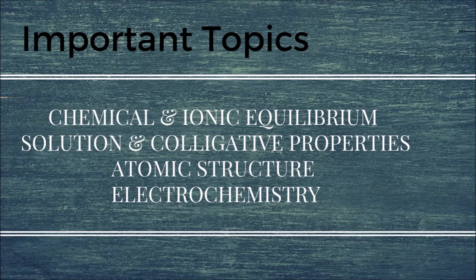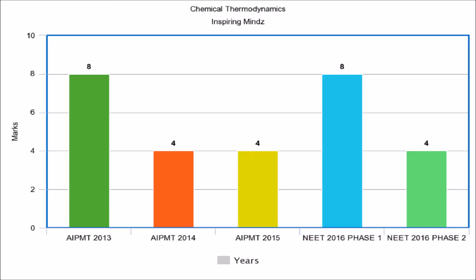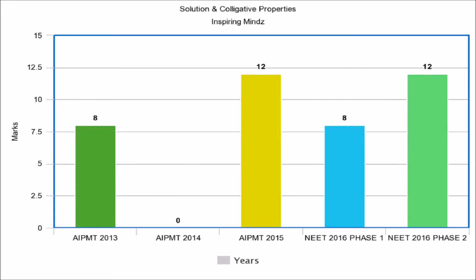Let's first discuss chemical bonding and ionic equilibrium. In AIPMD 2013, the weightage for this chapter was 16 marks. In AIPMD 2014, no questions were asked from this chapter. In AIPMD 2015, NEET 2016 Phase 1, and NEET 2016 Phase 2, the weightage for this chapter was 8 marks.